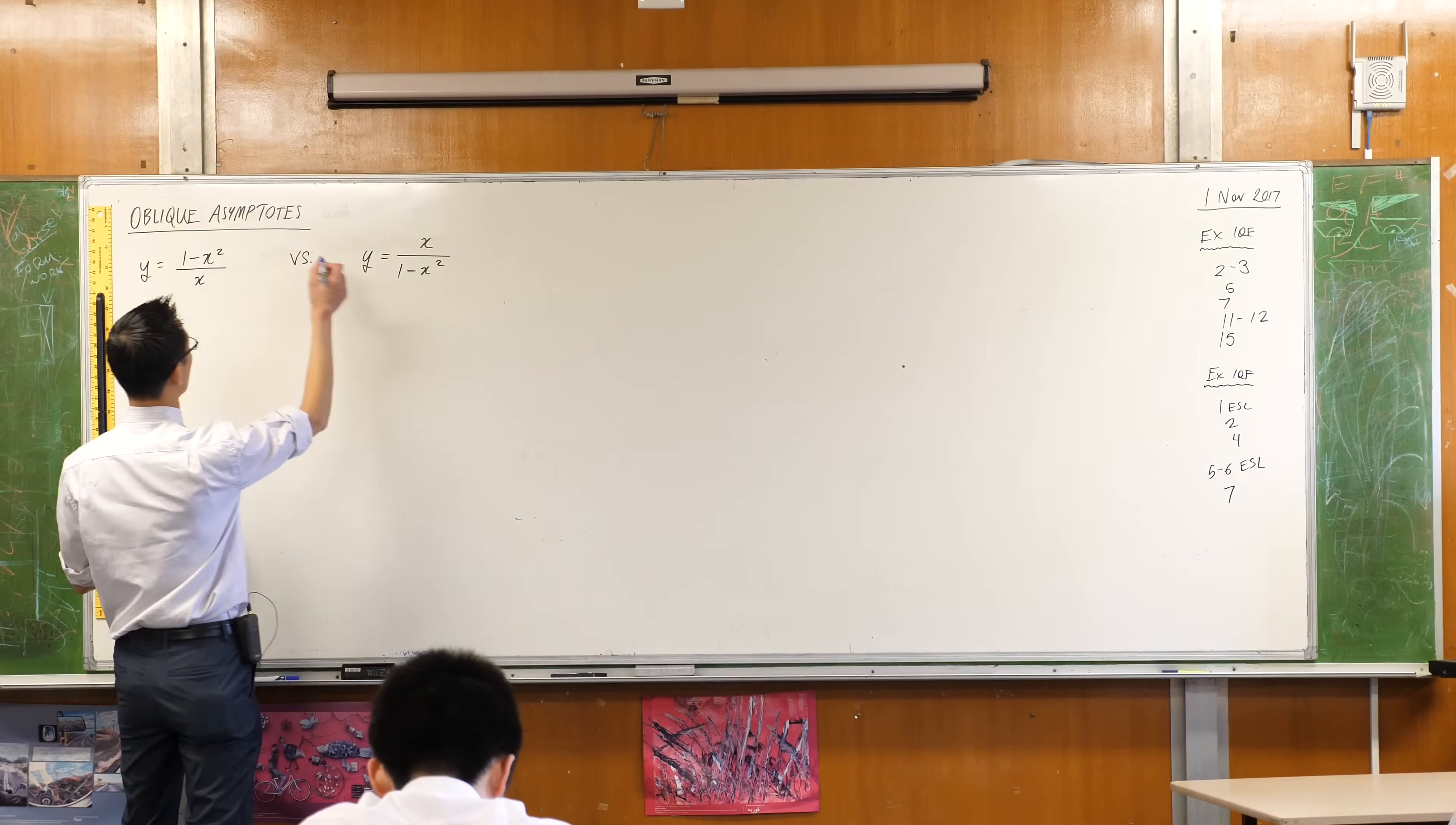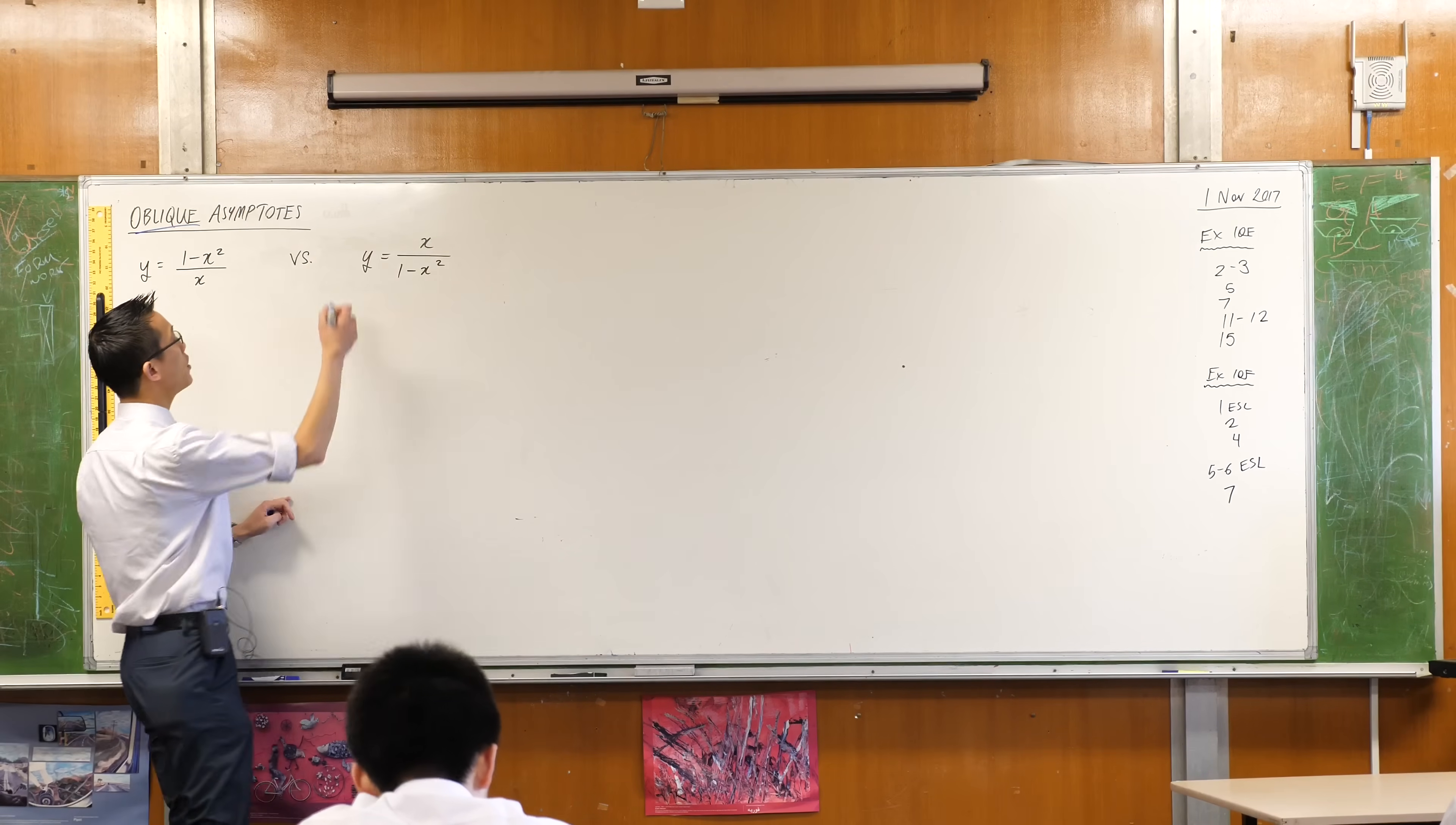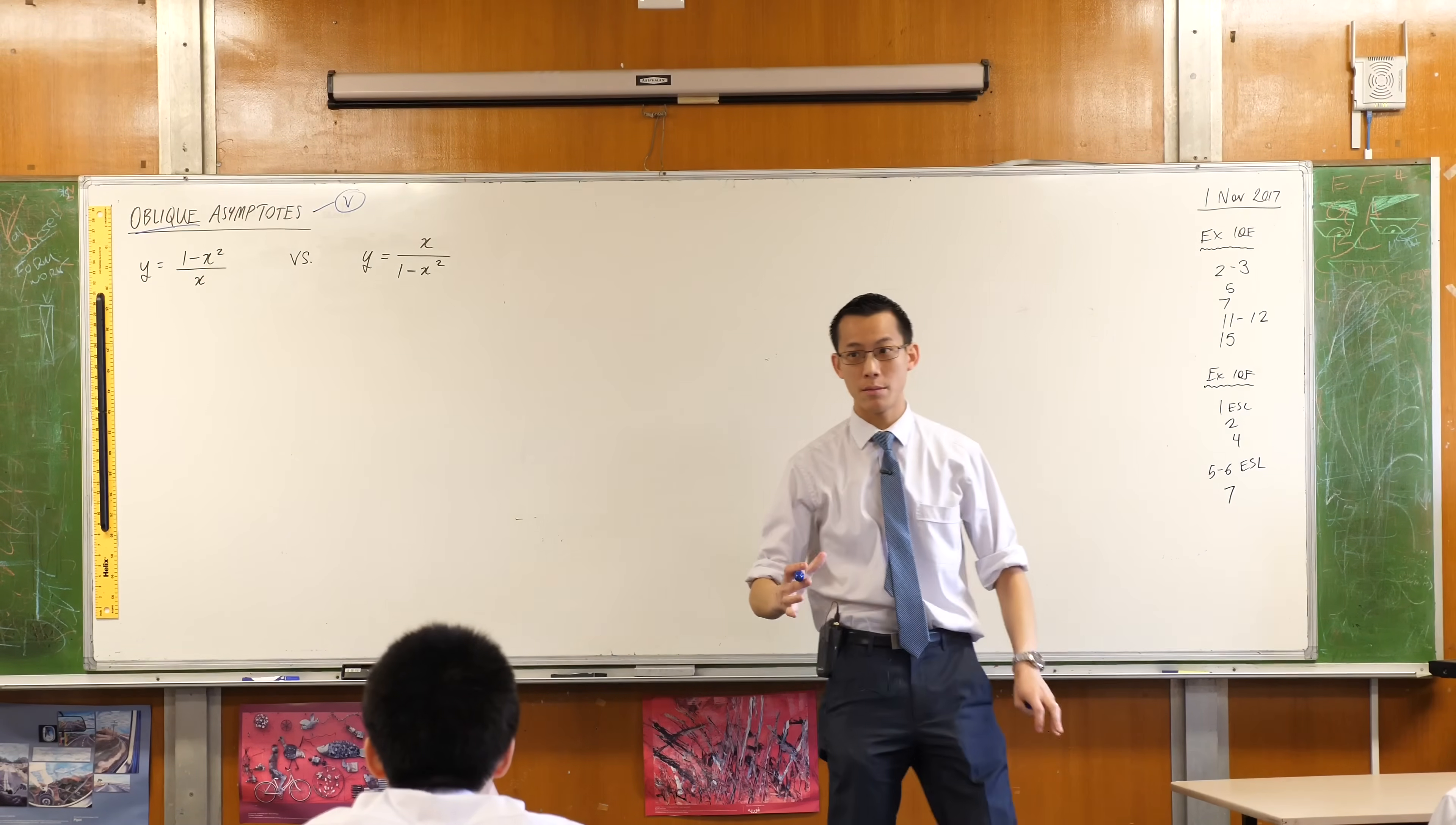We're having a look at asymptotes, or these kinds of asymptotes, because there are really easy asymptotes we know how to work with. For example, there are vertical asymptotes. These are the easiest to spot.